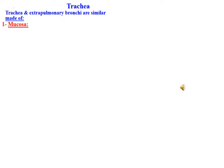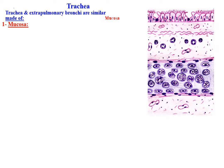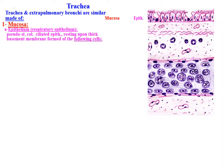Both trachea and extrapulmonary bronchi are similar. They are formed of the following layers: mucosa with epithelium of respiratory type, which is pseudostratified columnar ciliated epithelium resting upon a thick basement membrane, formed of the following cells.